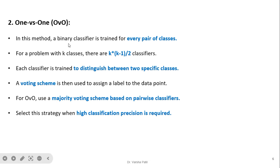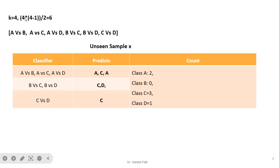The second strategy is One versus One. In this method, a binary classifier is trained for every pair of classes. For a problem with k classes, there are k(k-1)/2 classifiers. A voting scheme is used to assign a label to a data point using majority voting based on pairwise classifiers. This strategy is preferred when higher classification precision is required, but it is more computationally costly.